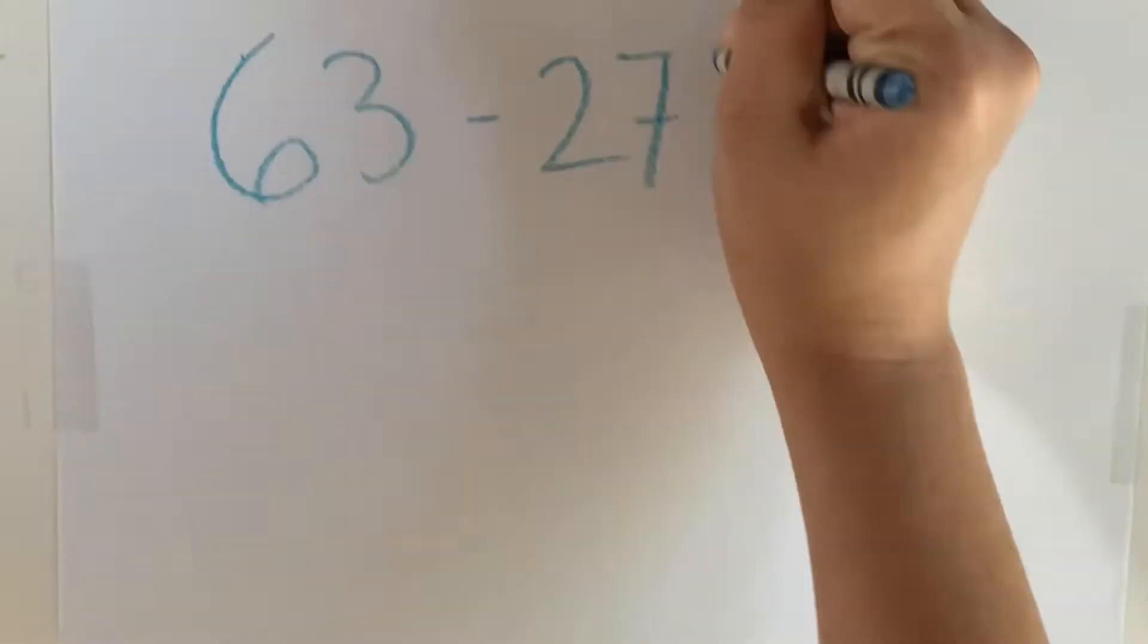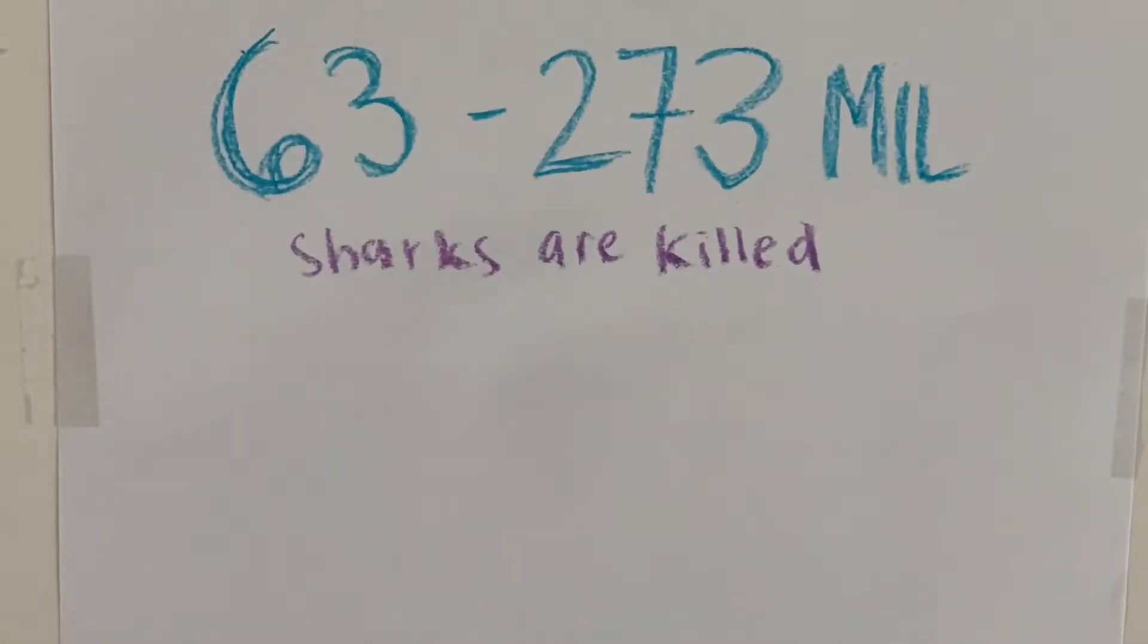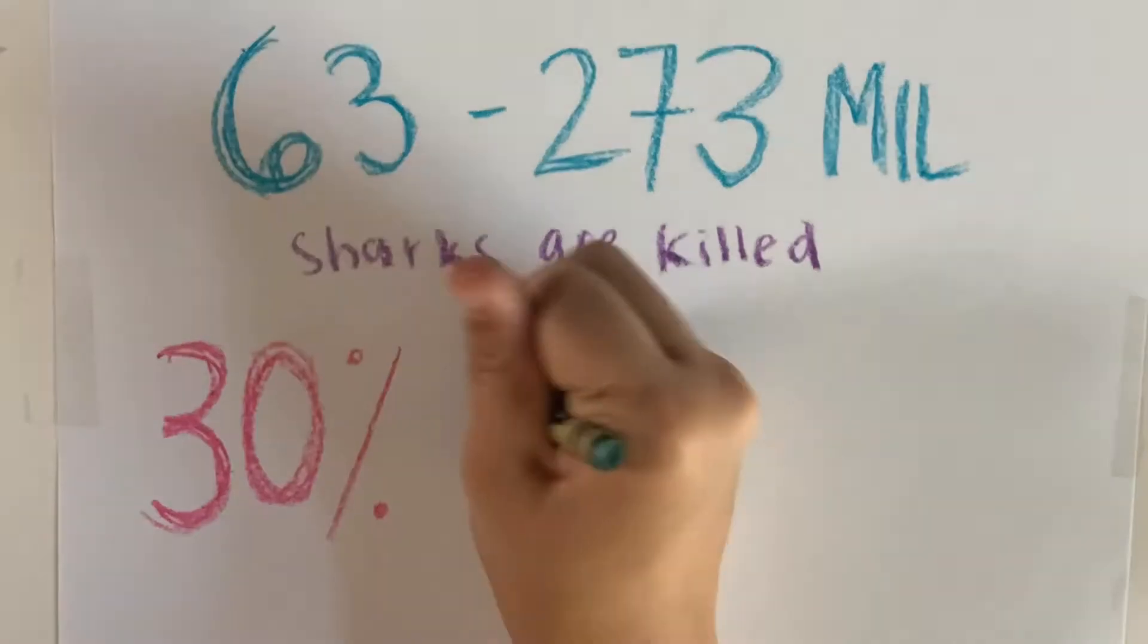Every year between 63 and 273 million sharks are killed. This means that they are killed on average 30 percent faster than they can replace themselves.